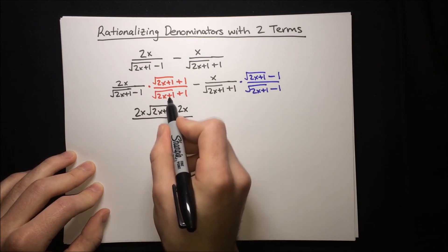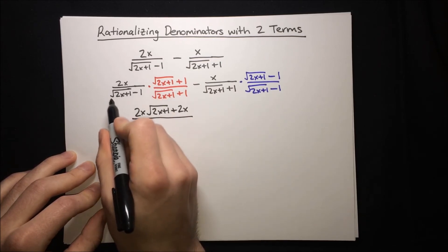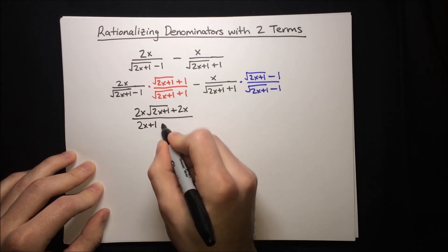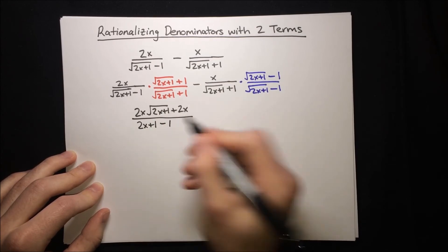And then on the bottom, that's just the difference of squares. The squares get rid of the root, so we've just got 2x plus 1 minus 1 squared is just 1 again.